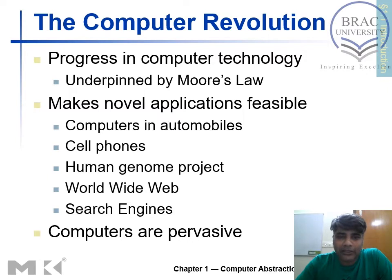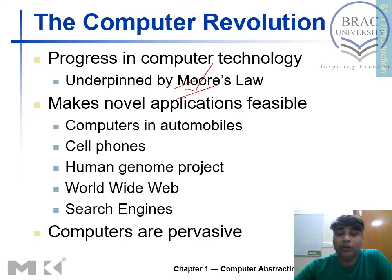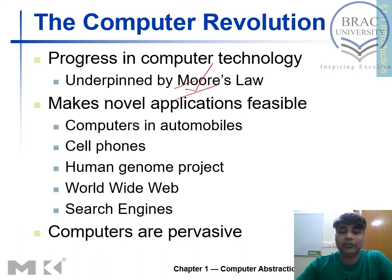One important thing mentioned here is Moore's Law, given by Gordon Moore in 1965. Moore predicted that the number of transistors in a single die would double every 18 months to 2 years. So if you have 100 transistors in a die now, after 18 months to 2 years you can accommodate 200 transistors on the same area. Transistor technology actually evolved based on Moore's Law.